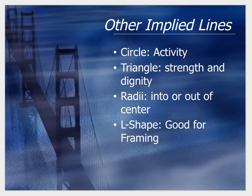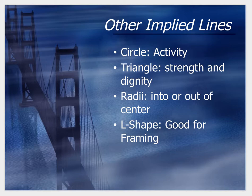Here are a few more examples of implied lines: circles, triangles, radii, and the L shape. Circles create activity because they help add movement to the photo. Triangles create strength and dignity because they add a sense of stability. The radii simply draws the viewer's eyes in and out of the center of the photo. Lastly, the L shape is good for framing the photo and helps draw more attention towards the subject.